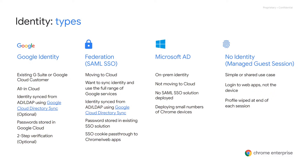Another option available to enterprise customers is direct Microsoft Active Directory integration. With this setup, the user authenticates with their Active Directory username and password. The entered credentials are checked directly against AD. There is no need for a SAML identity provider to be configured. We usually see customers opting for this solution during Chrome pilots and testing. In production environments, we would encourage customers to move towards federation if possible.